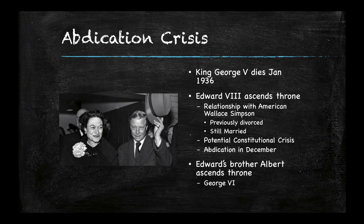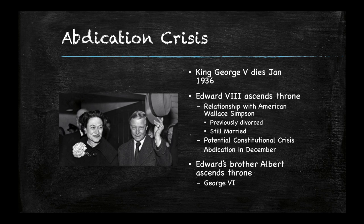The other person closely tied — or at least popular perception had him closely tied — with the Nazis was King Edward himself. King George V died in January of 1936, and Edward VIII came to the throne. He was the one who was married to an American divorcee named Wallis Simpson, and she may have been still married at the time. There was a potential crisis, and Edward, out of love for his wife, decided to abdicate the throne. His brother Albert came to the throne, taking the name George VI.